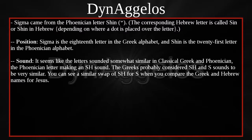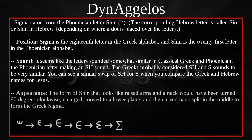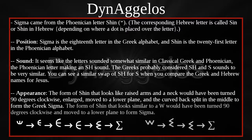You can see a similar swap of SH for S when you compare the Greek and Hebrew names for Jesus — the SH in Yeshua became an S sound in Jesus. The form of SHIN that looks like raised arms and a neck would have been turned 90 degrees clockwise, enlarged, moved to a lower plane, and the curved back split in the middle to form the Greek SIGMA. The form of SHIN that looks similar to a W would have been turned 90 degrees clockwise and moved to a lower plane to form SIGMA.